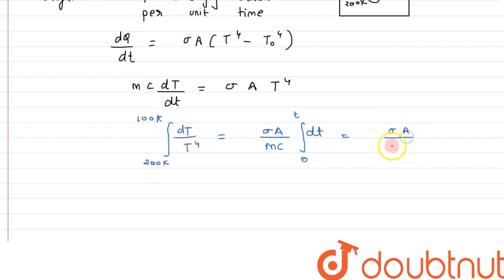Now we can solve it further. This can be written as σA divided by—instead of mass, we can write it as density into volume into c. Here we will put a negative sign, because when the body's temperature is reducing from 200 to 100 kelvin, its volume will decrease. That's the reason we're putting a negative sign.